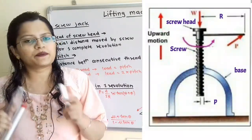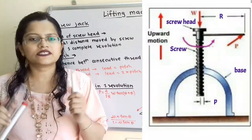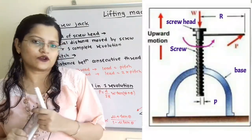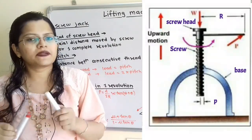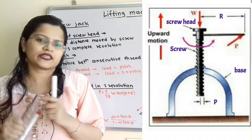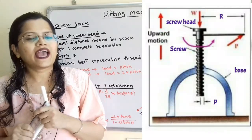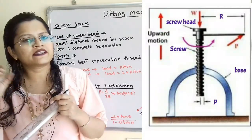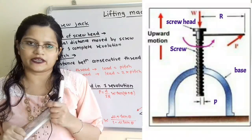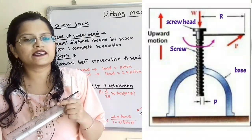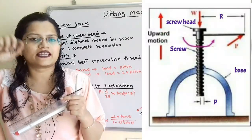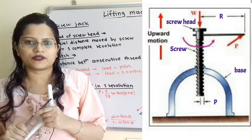Let us understand some important terms related to screw jack. Screw jack is used to lift the load. The load is placed on the screw head and the screw head is rotated with the help of a lever. We have to apply effort at the end of the lever to rotate the screw head. As the screw head is rotated, the screw will move in the upward direction about the axis of the screw.